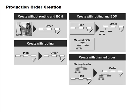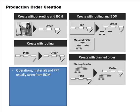You may create an order with a routing but no specific materials, or you might manually create an order with a routing and a BOM. The typical MRP-driven scenario creates a planned order for a material and the corresponding BOM and routing are pulled in automatically. The operations, materials, and PRT will usually be picked up from the BOM for the production order.